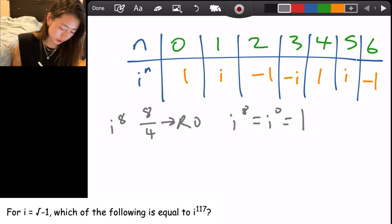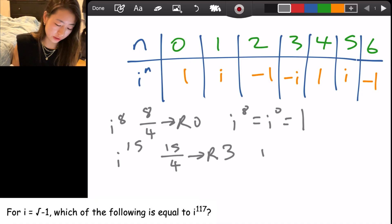And for a larger number like i to the 15th power, 15 divided by 4 gives you a remainder of 3. Under i to the third power, it's negative i. So i to the 15th equals negative i.